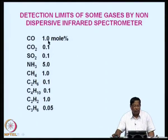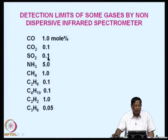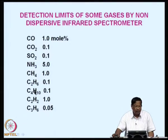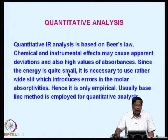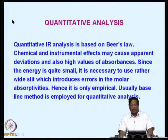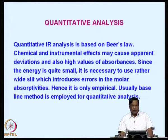Detection limits of some gases determined by this technique are: carbon monoxide is 1 mole percent, carbon dioxide is 0.1, sulphur dioxide is 0.1, ammonia is 0.5, methane, ethane, butane, acetylene, C3H6, and so on. The chemical analysis of process gases can be done using non-dispersive infrared.